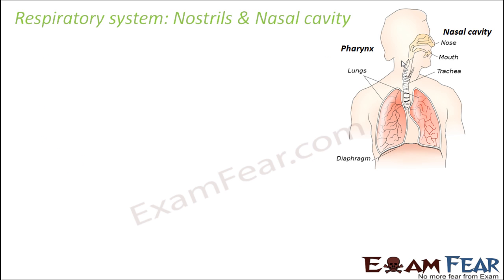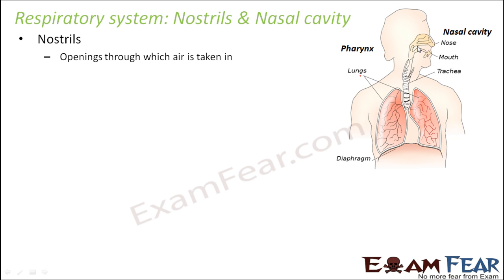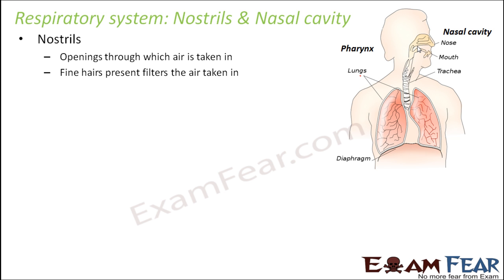Let us now discuss each part in detail, starting with nostrils and nasal cavity. Nostrils are the openings through which air is taken in — you can see two openings in your nose. Fine hairs are present in the nostrils which filter the air we take in, stopping impurities and dirt particles from entering.